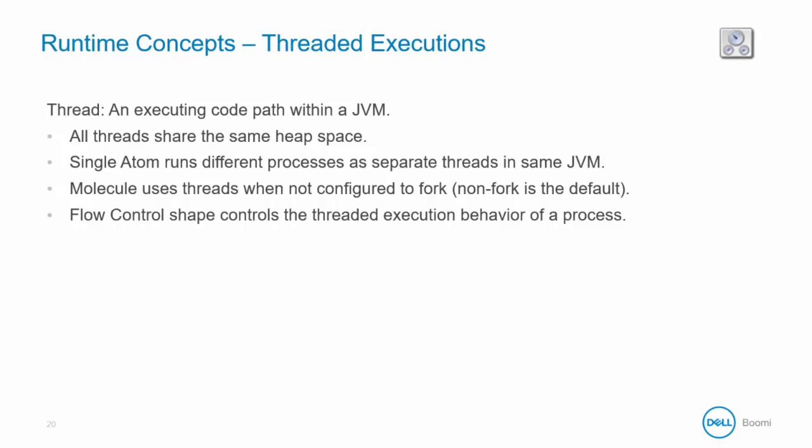A molecule also uses threads per execution by default, but not if forked executions is turned on. You can use the flow control shape in your process to allow it to execute across multiple threads. This is how we can enable some parallel processing within our processes, but those parallel threads are again utilizing the same heap space. This is in contrast to how forked executions work, which we'll take a look at shortly.